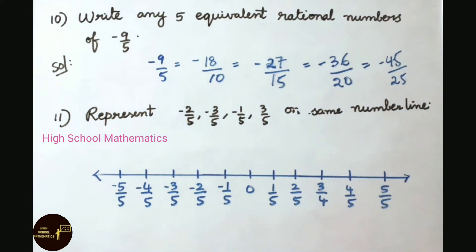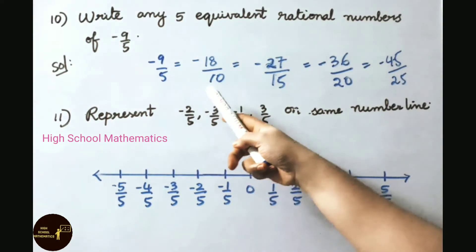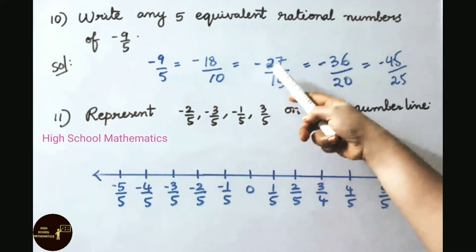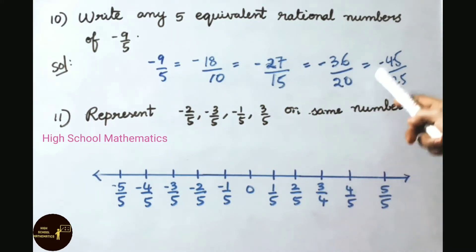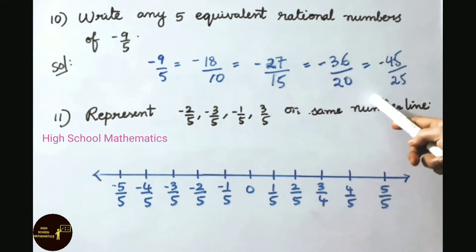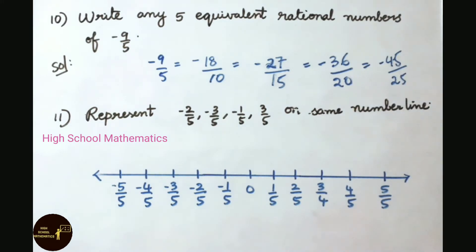Therefore, the five equivalent rational numbers of minus 9 by 5 are: minus 18 by 10, minus 27 by 15, minus 36 by 20, and minus 45 by 25.